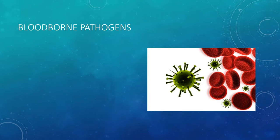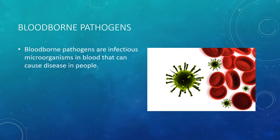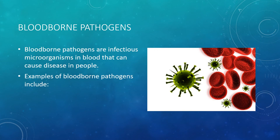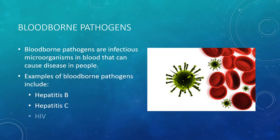Bloodborne pathogens are infectious microorganisms in blood that can cause disease in people. Examples of bloodborne pathogens include Hepatitis B, Hepatitis C, and HIV.